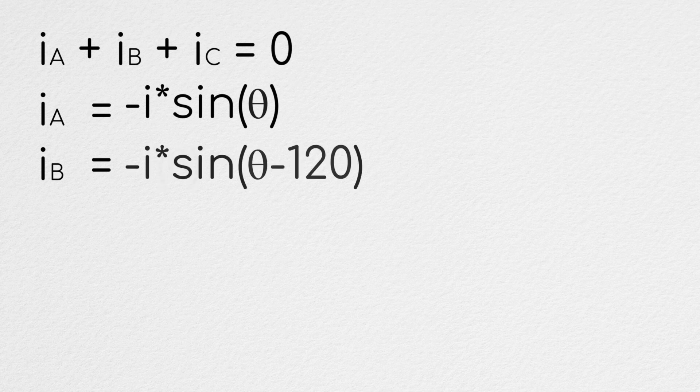The current flowing out of phase a will be defined equal to negative i times sine of theta, and the current flowing out of phase b will be negative i times sine of theta minus 120.